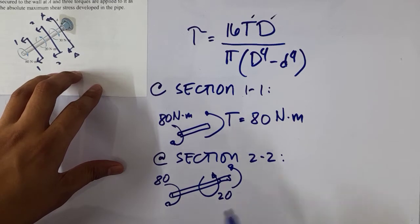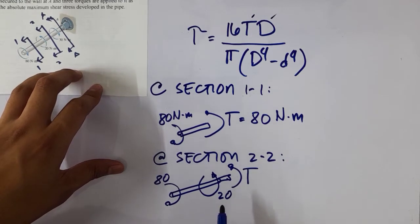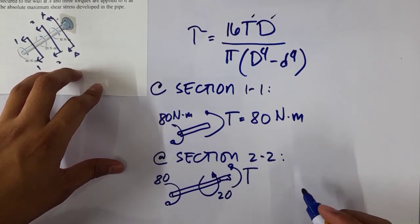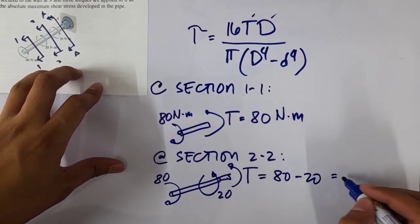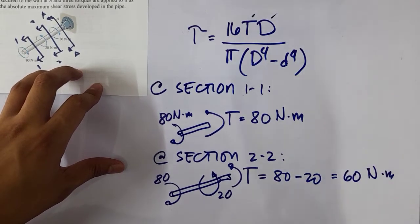Because 80 is larger than 20, probably the torque here is the same direction as the 20, because it will have the 20 torque resist the 80 N·m torque. So our torque here is equal to 80 minus 20, which equals 60 N·m.